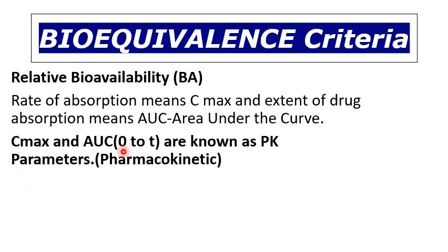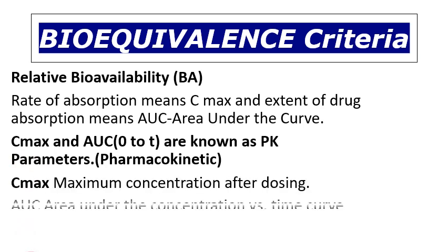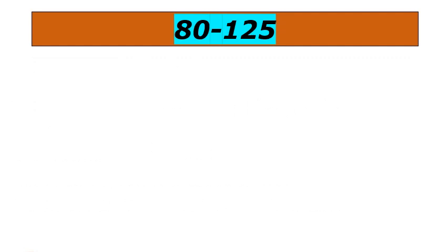Cmax and AUC (0 to T) — the interval between which the AUC is measured — are the key PK parameters. AUC can also be expressed as 0 to tau for some products, and 0 to infinity. These are the pharmacokinetic parameters. Cmax is the maximum concentration after dosing, and AUC is the area under the concentration versus time curve.